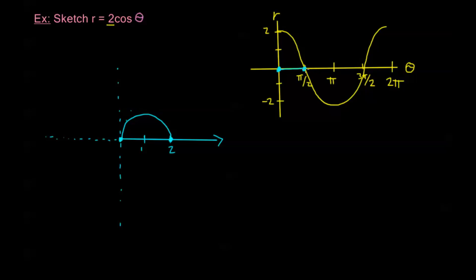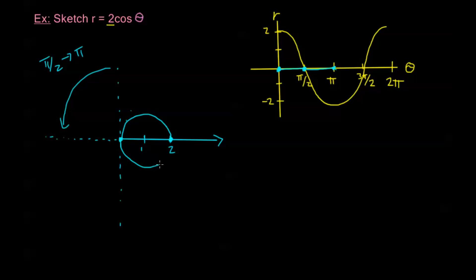From pi over 2 to pi, r goes from 0 to negative 2. With negative r values, points go in the opposite direction of the angle — so instead of pointing into the second quadrant, the points land in the fourth quadrant. When I'm at 3 pi over 4, my r should be a little less than negative 1, so the distance is a little more than 1 in the opposite direction.